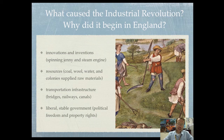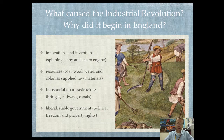And finally, in England you also had a liberal, stable government. You need political freedom. You need property rights. If you don't have those things, the Industrial Revolution cannot happen.